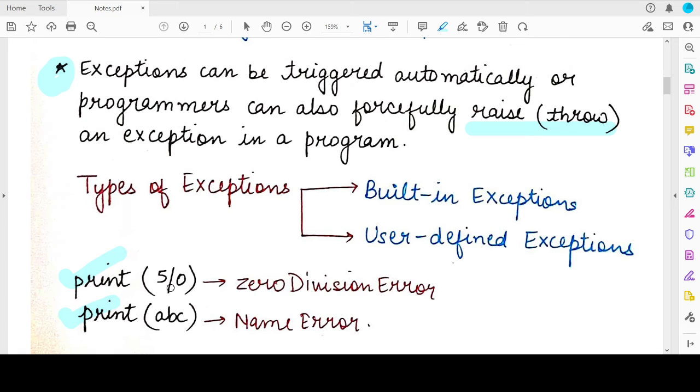So a simple statement like this which is performing a division but the denominator is zero. This particular statement will raise a zero division error and a zero division error is a kind of built-in exception which we will study in the next class and this is as simple as this. This is what is known as an exception.